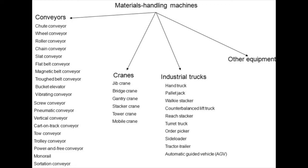Types of cranes include: jib crane, bridge crane, gantry crane, stacker crane, tower crane, and mobile crane. A wide variety of industrial trucks are also available, including: hand truck, pallet jack, walkie stacker, counterbalance lift truck, reach stacker, turret truck, order pickers, side loader, tractor-trailer, and very importantly, AGVs or Automatic Guided Vehicles.